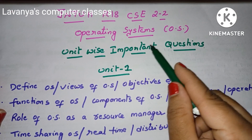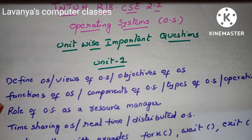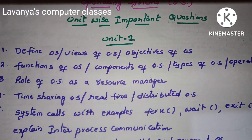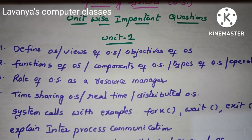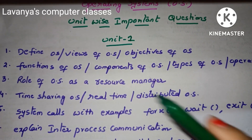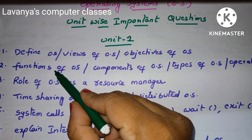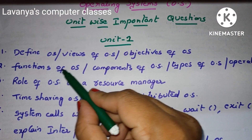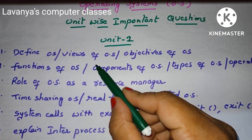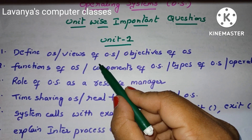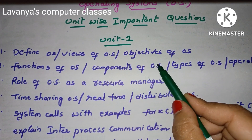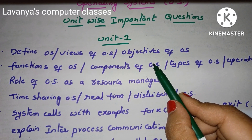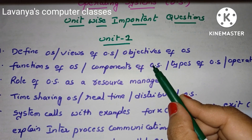This is R18 series 2nd year 2nd semester unit wise. First, unit 1. The first question is define OS — define operating system, or explain the views of operating system, or objectives of operating system. These are totally introduction questions.